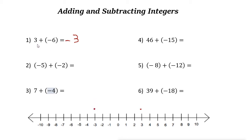Another way: if you have two integers with different signs — this one is positive 3 and this one is negative 6 — just find the difference. The difference of 6 and 3 is 3. Then put the sign of the bigger number. If you ignore the signs, 6 is bigger than 3, and the sign of 6 is negative, so the answer is negative 3.